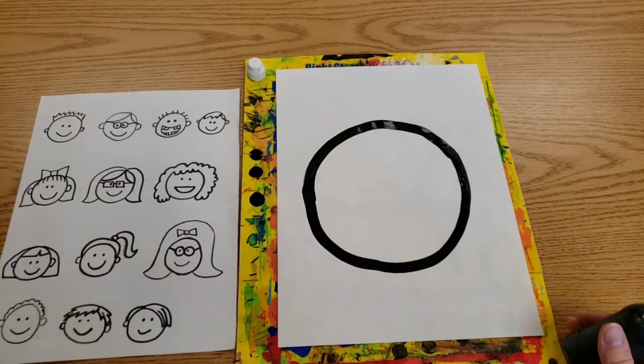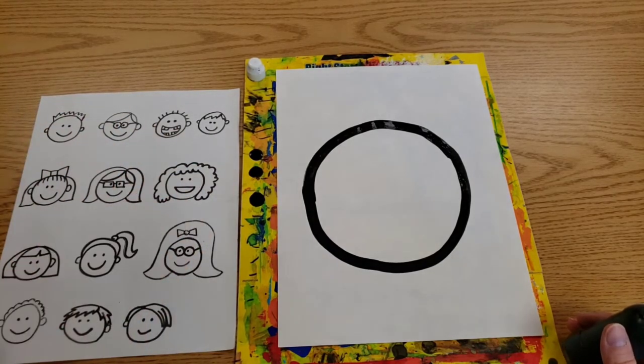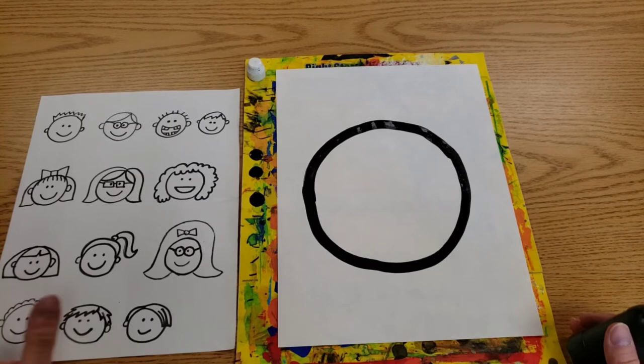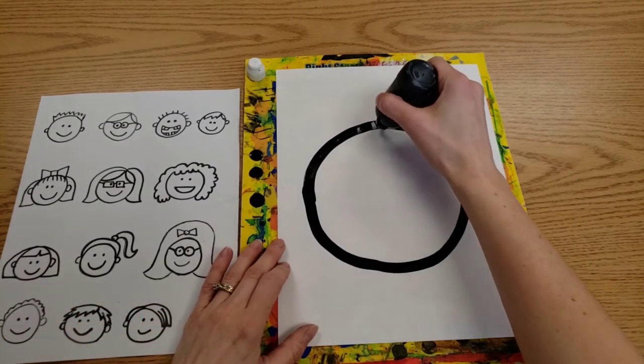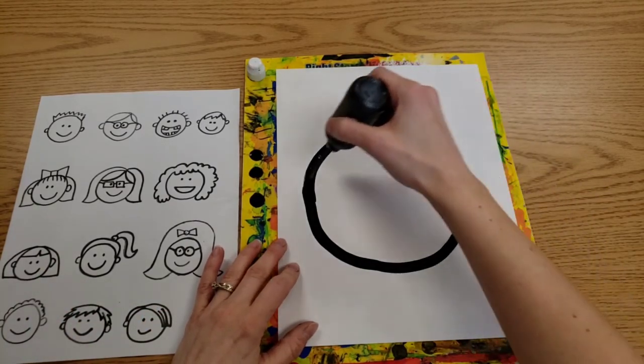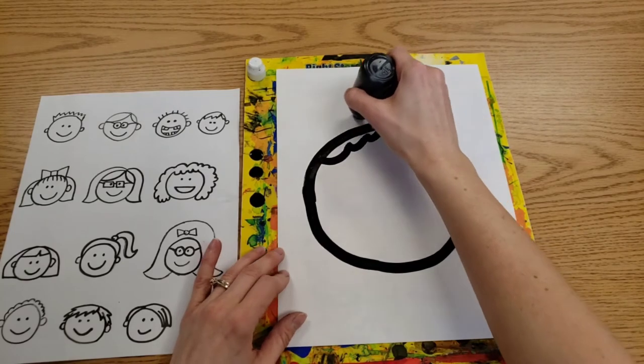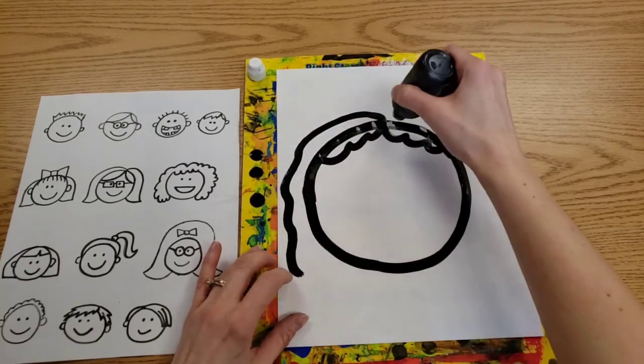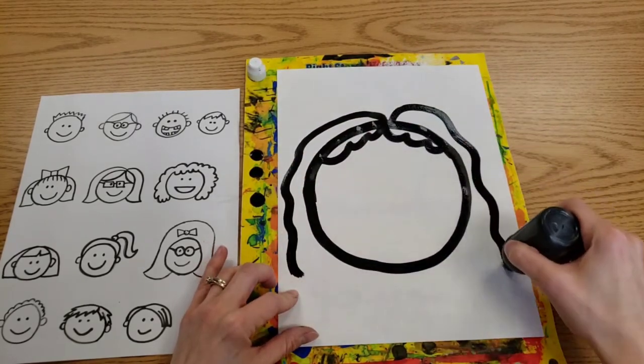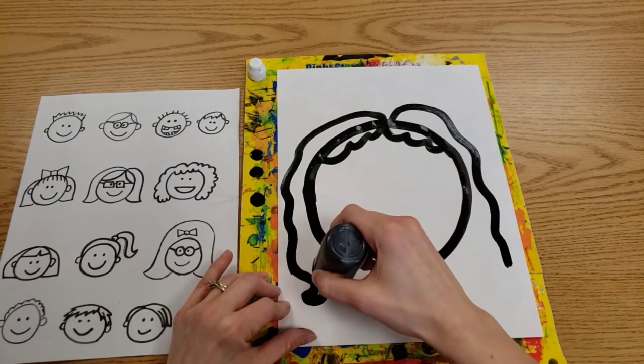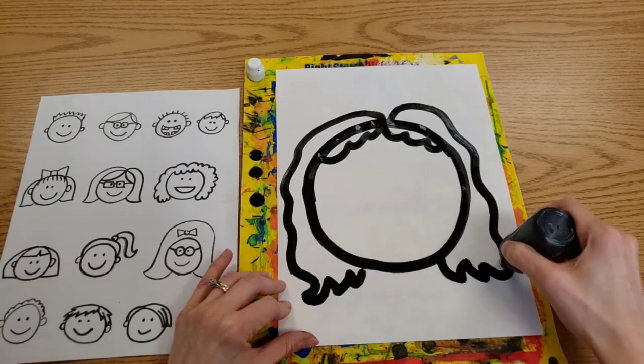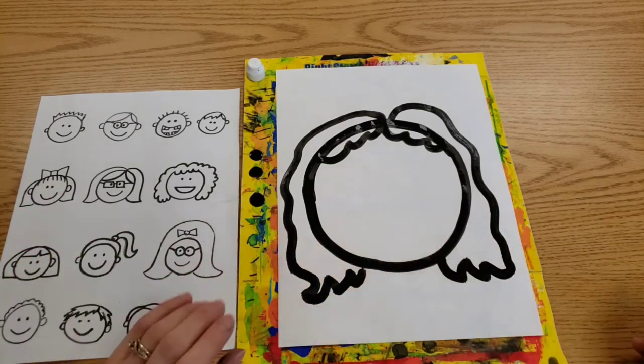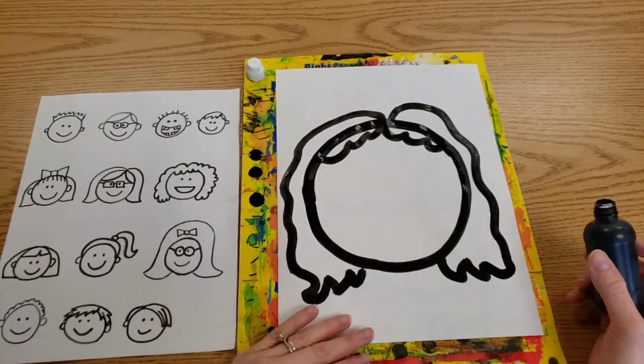Then think about what does your hair look like? Do any of these people have hair that looks kind of like yours? And you can always change things. So I have kind of wavy hair, so I am adding wavy hair to my person. And I'm not worrying about a neck or shoulders. We're just doing the head.